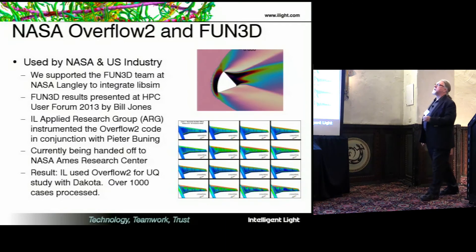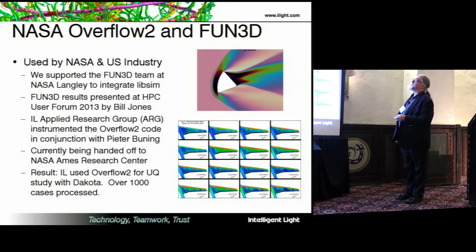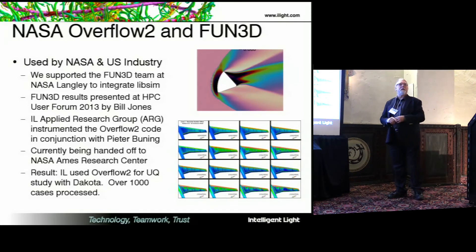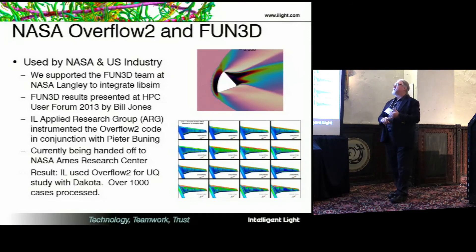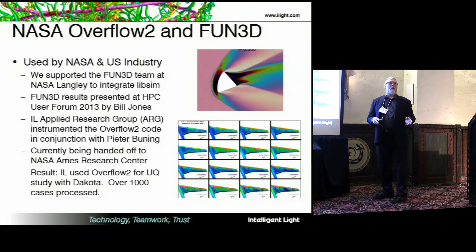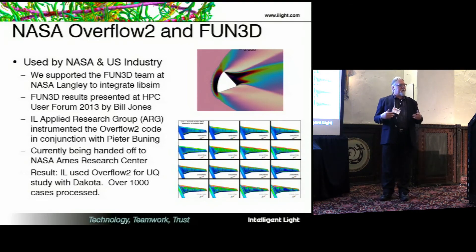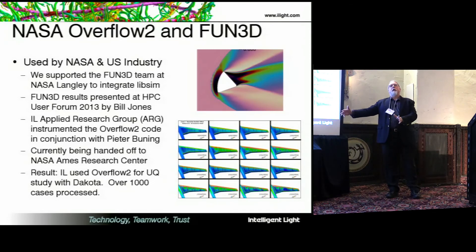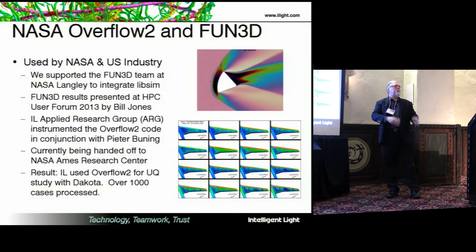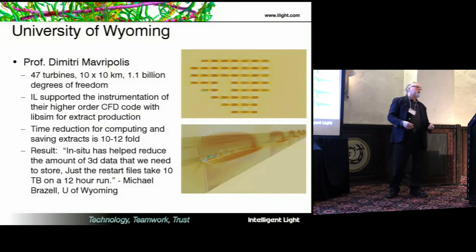For NASA, we work primarily with Overflow 2 and Fun3D. Fun3D was the first NASA project — we worked with Bill Jones at NASA Langley, who presented at the HPC User Forum in 2013. We then instrumented the popular Overflow 2 code, working with Peter Buening, currently being handed off to David Gao at NASA Ames — a code used by much of American aerospace industry. We've also been using Overflow 2 for a large-scale non-deterministic engineering and uncertainty quantification project, using in-situ to scrape surface results from the solver, putting extracts in a database subsequently processed by the Dakota software from Sandia.